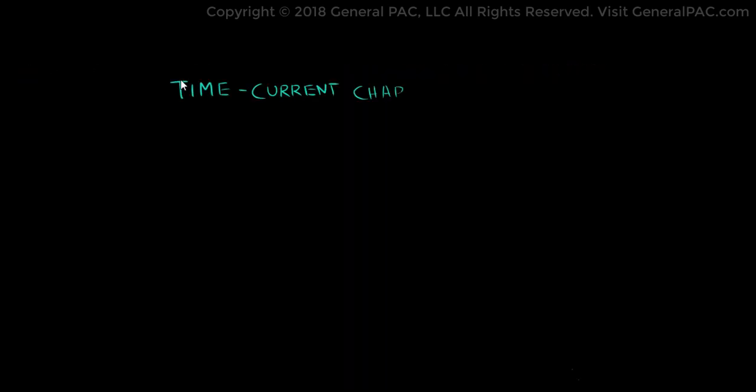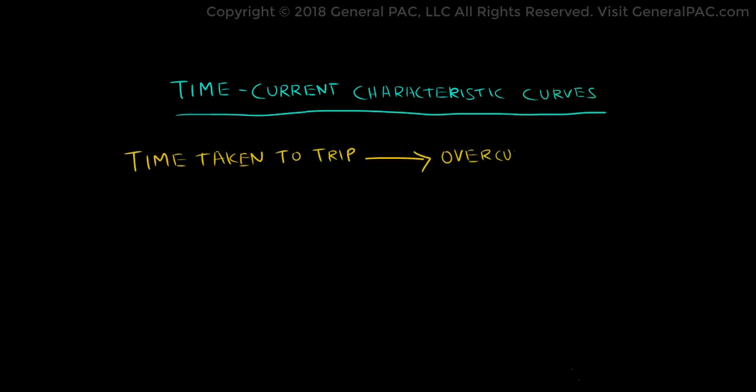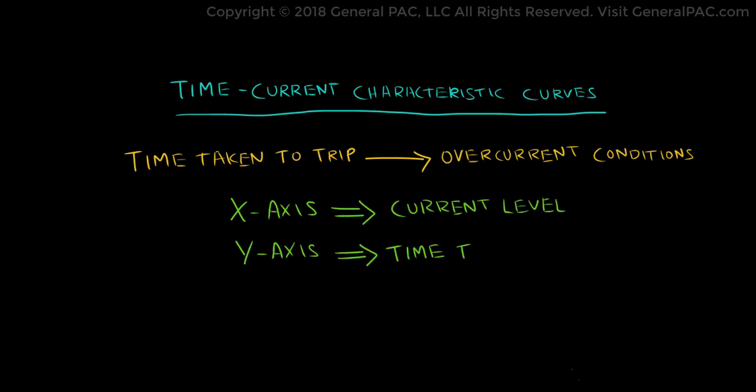Time-current characteristic curves are used to show the time taken by the breaker to trip for a range of overcurrent conditions. They define the operating characteristics of a protective device. The x-axis shows the current level, and the y-axis shows the time taken by the protective device before the trip action is initiated.